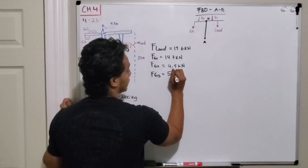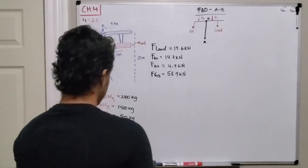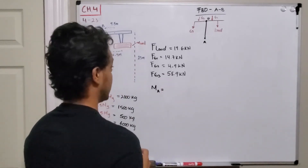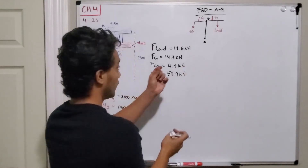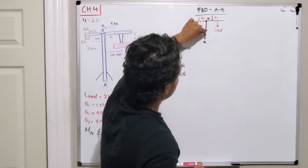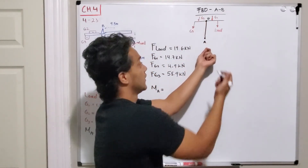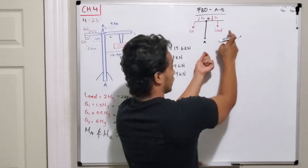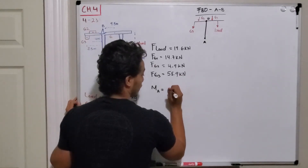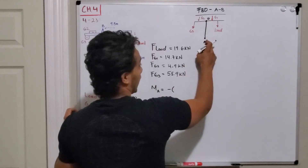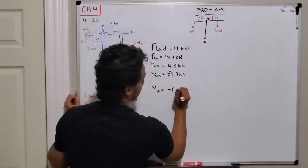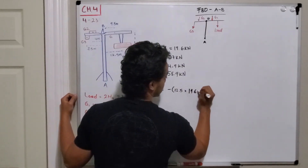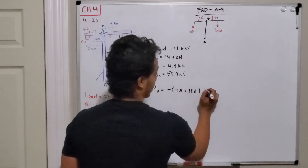The moment is force times distance. For the moment about point A, the load is going down and makes the system rotate clockwise, so we take it as negative. The distance between A and the load is 12.5 meters, so we have negative 12.5 meters multiplied by 19.6 kilonewtons.